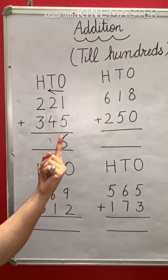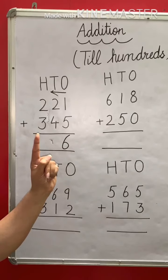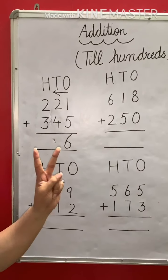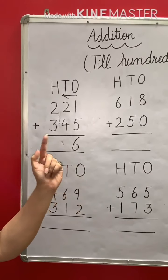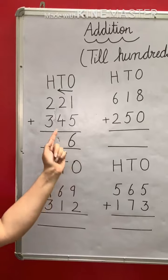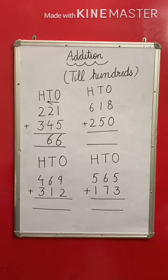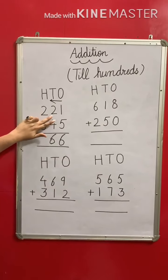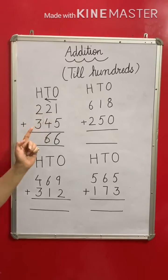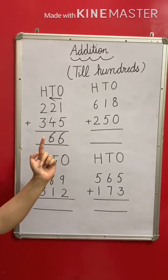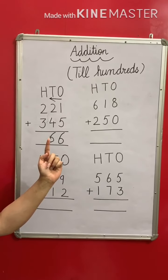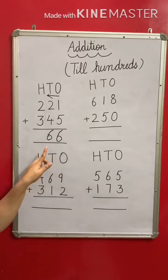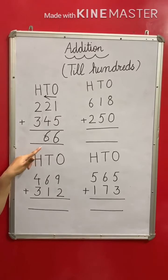Which finger am I using most times? The index finger. So 4 in the mind and 2 fingers up, or counting in blocks — whatever suits you. When we keep 4 in mind and count 2 numbers forward, that means 2 blocks forward: after 4 comes 5, and after 5 comes 6. So we will write 6 at the tens place also.